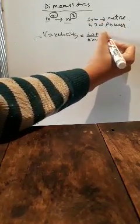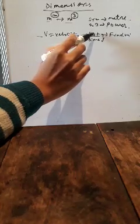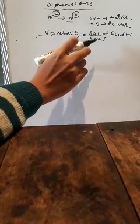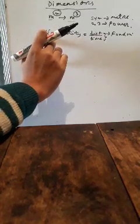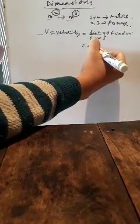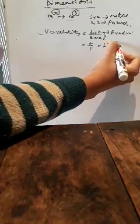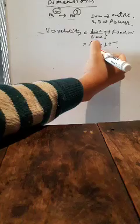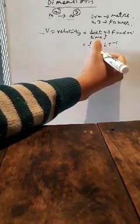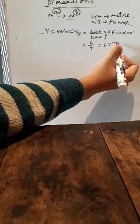These are your fundamental units. Since velocity is using these two fundamental units — distance and time — velocity is your derived physical quantity. So, what is your dimension? If you write for distance, what will you write? L. And for time, what will you write? T. So L by T equals L T to the power minus 1. Why? Because T was in your denominator. So when you put T in the numerator, you write L T to the power minus 1.